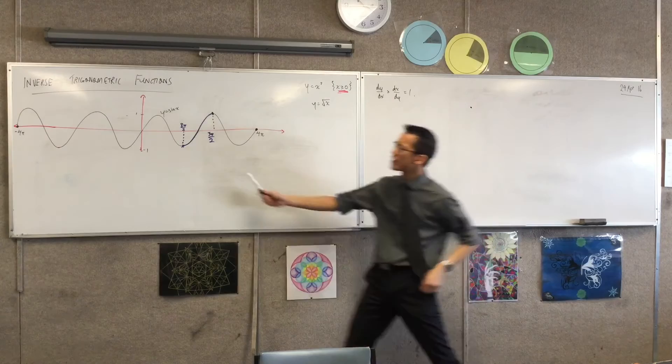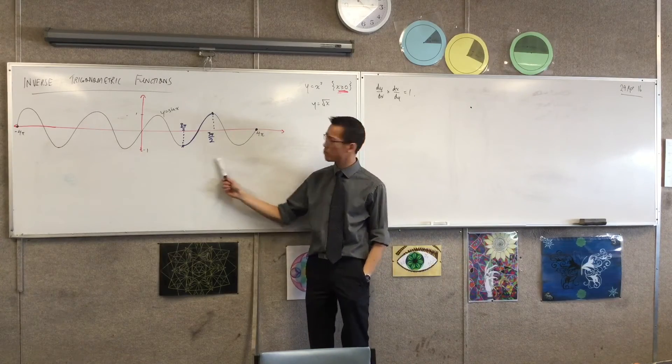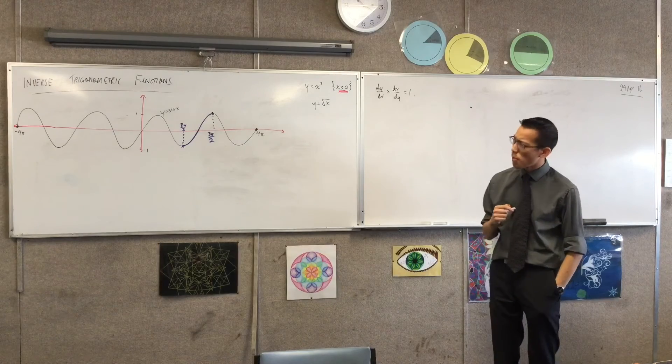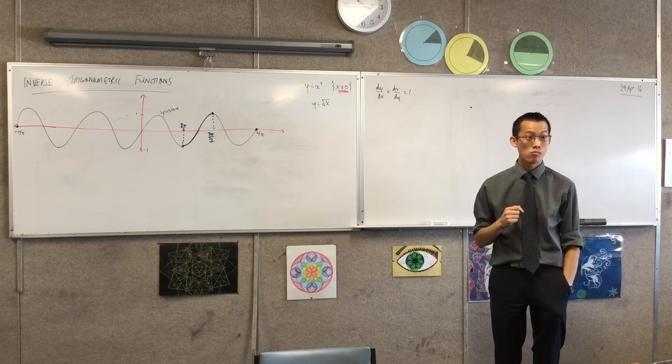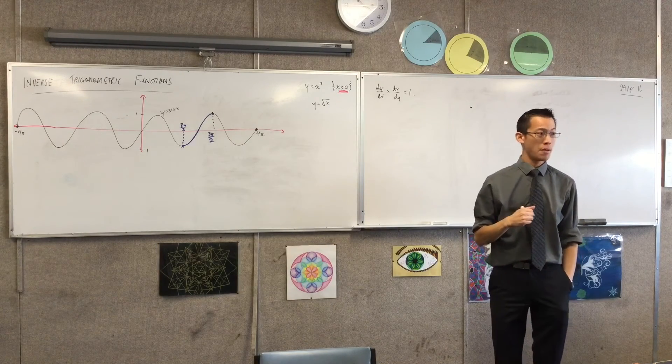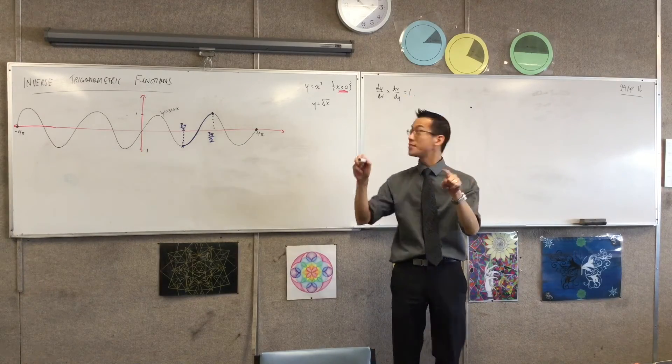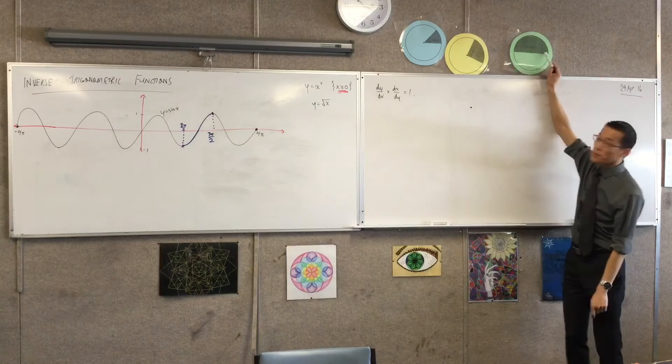I guess another way of saying it is what kind of angles are in this domain? What kind of angles? Three π on two. Three π on two right. That's you go all the way from zero to π, you go all the way from zero to π and then you've gone three π on two right?